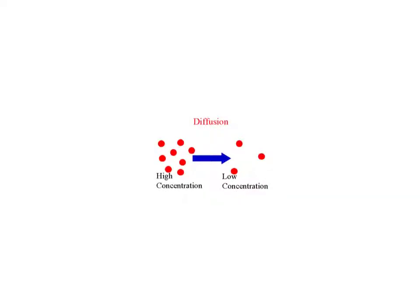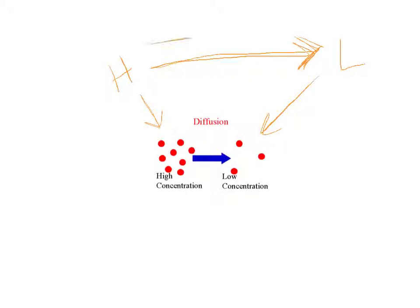Let's start our discussion with diffusion. Diffusion is the idea that particles in high concentration — notice there are many more on one side than the other — will move towards the area of low concentration. That's a property of nature. You'll see that high pressures move towards low pressures, high concentrations move to low concentrations. Things always move from high to low.